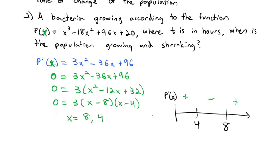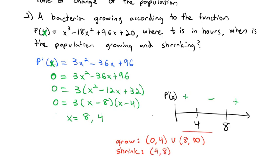So the population is growing on (0, 4) ∪ (8, ∞) — where the derivative is positive — and shrinking on (4, 8) — where the derivative is negative. So we've covered physics with velocity and acceleration, business with cost, revenue, and profit, and population change: a few key applications of the derivative. We'll talk about more as the course develops, but that's enough to get you going. We'll see you in class to dive into these a little bit deeper.